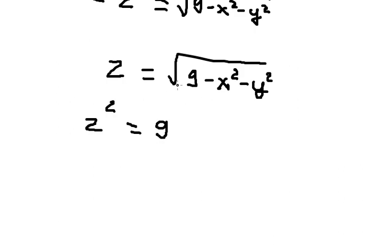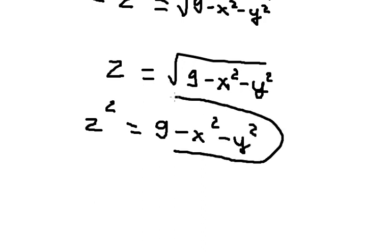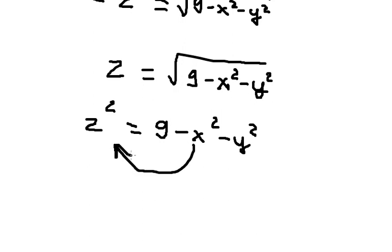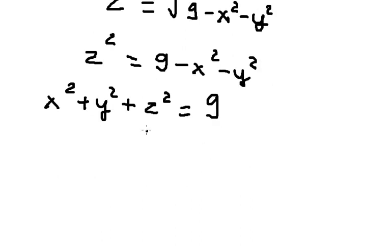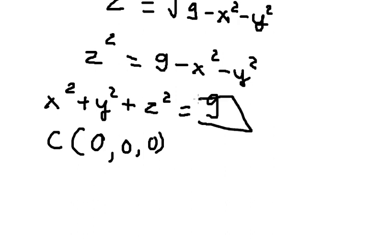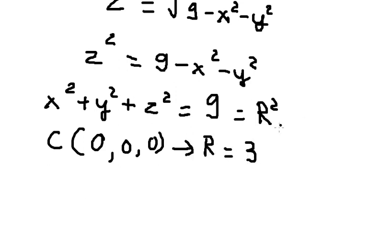Moving the squared term to the left side, we can recognize this as the equation of a sphere centered at the origin (0, 0, 0). From this we can find the radius of the sphere, which is 3, because 3 squared equals 9.